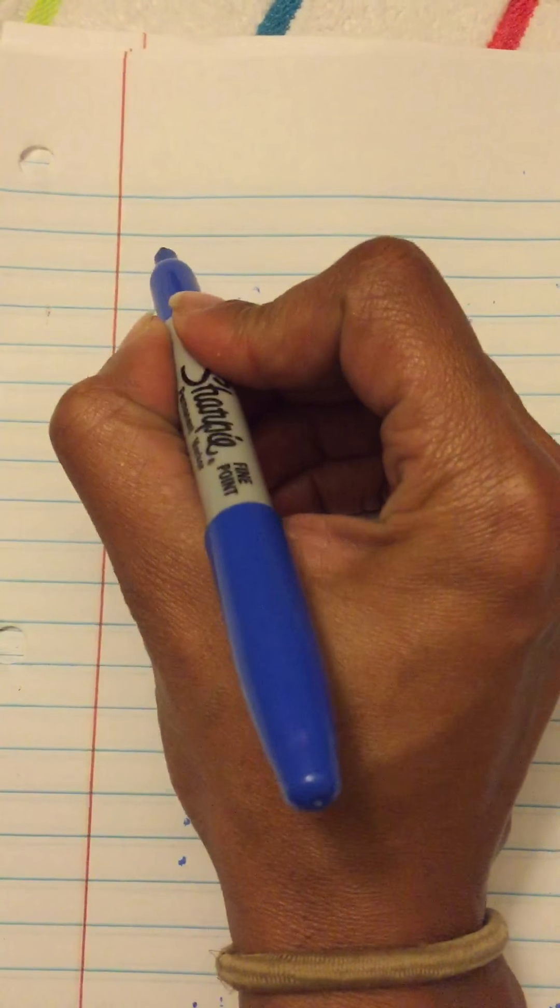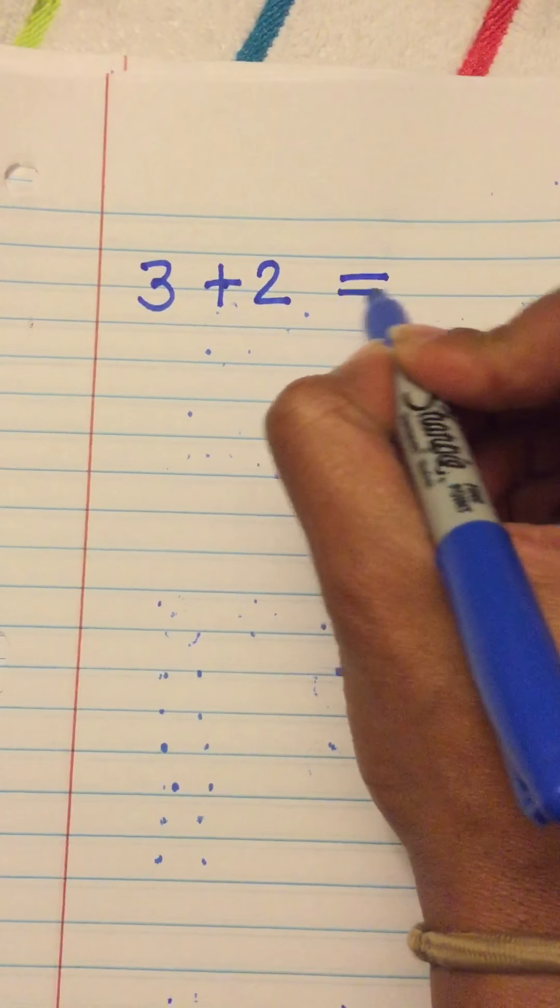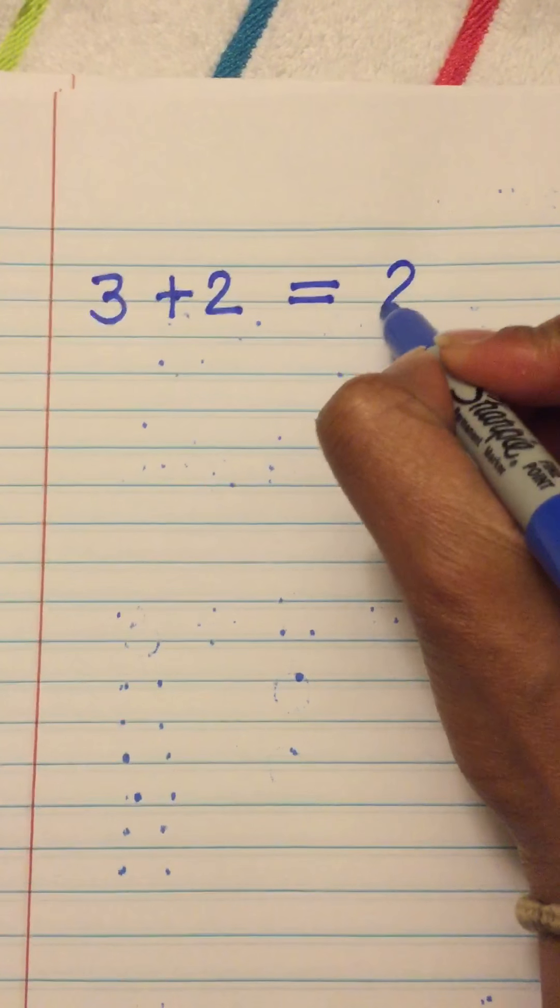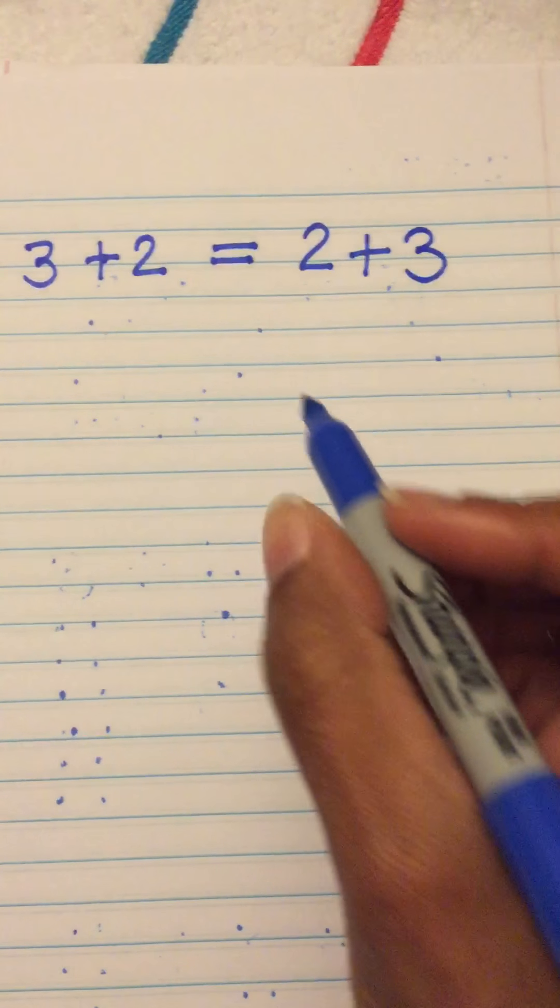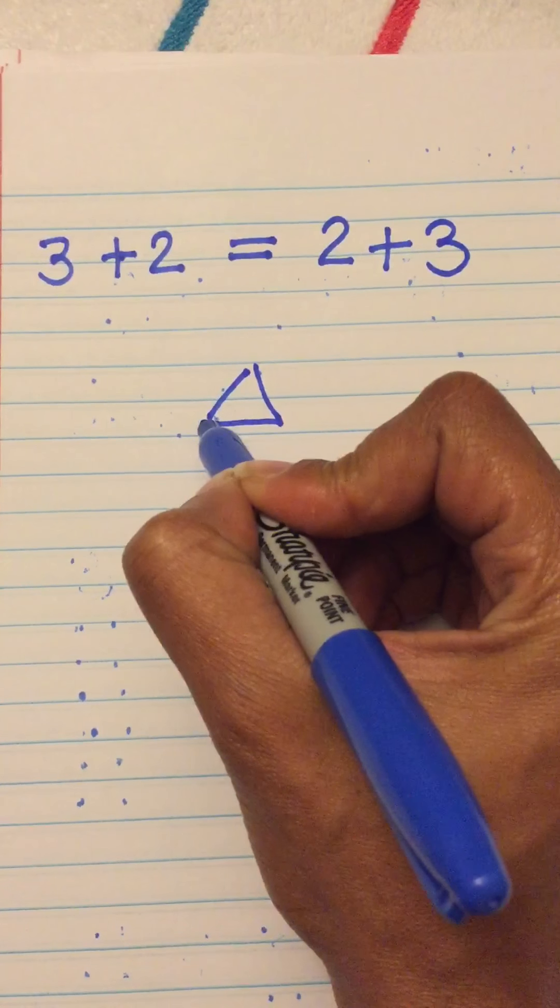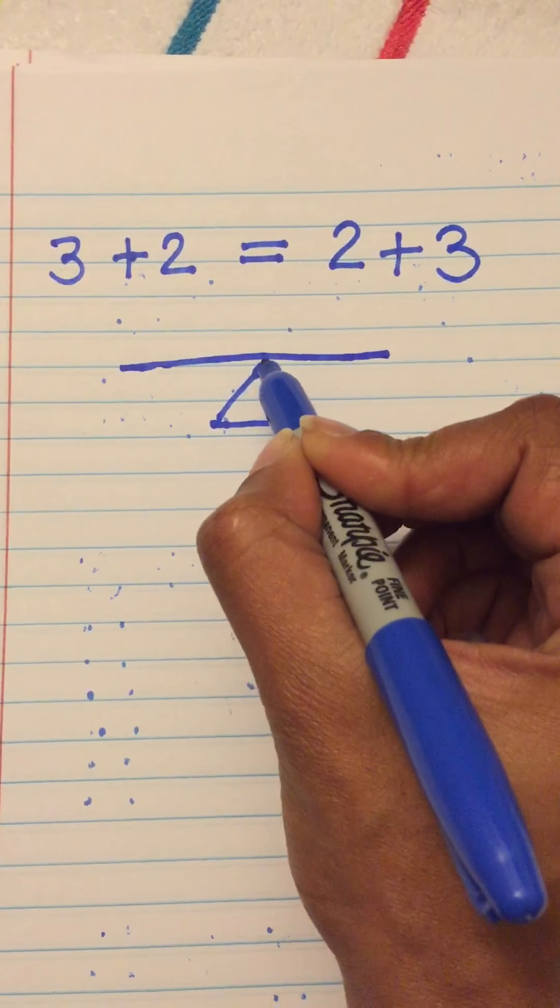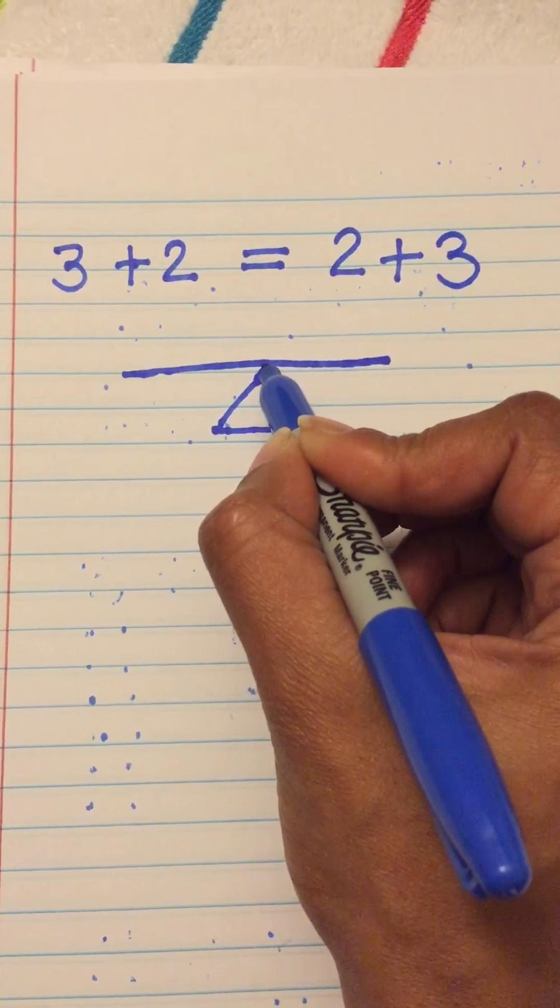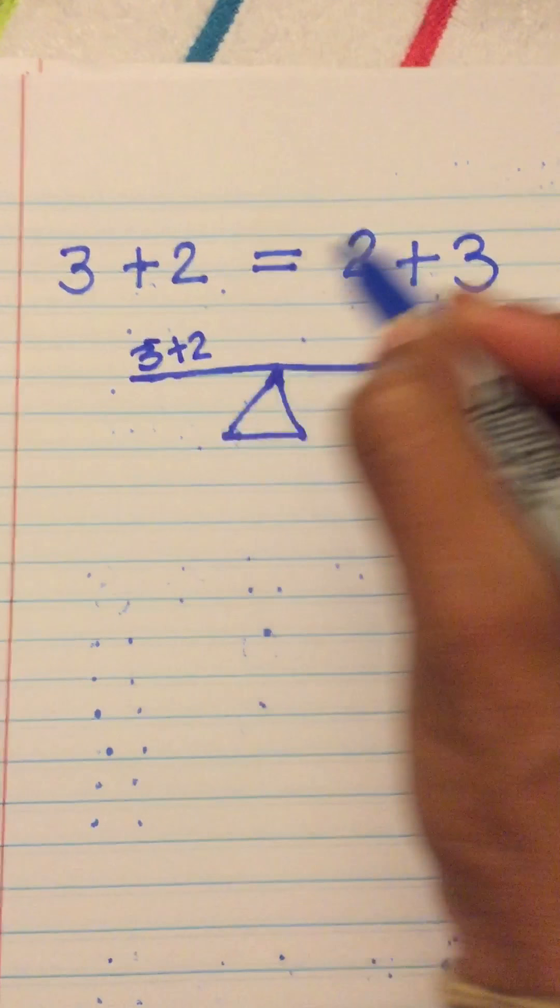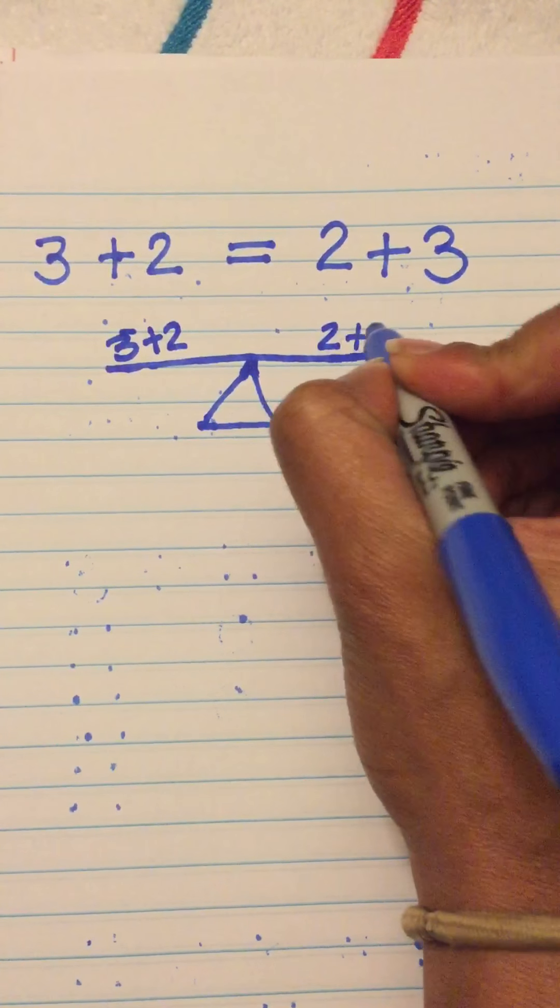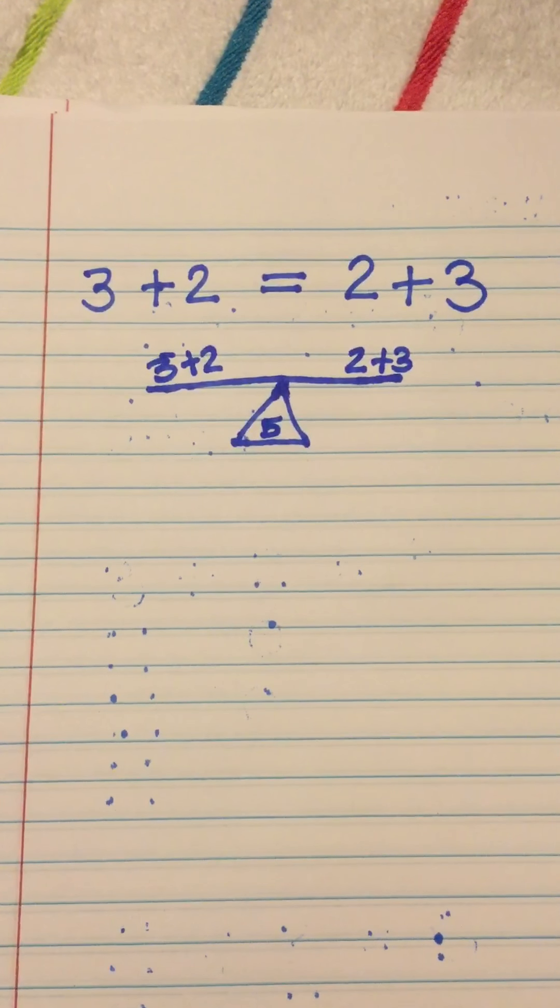We can say three plus two is equal to or the same as two plus three. Remember, if we put these on the seesaw like we do in class, they will be the same, balancing all very nicely on our seesaw. So, three plus two and two plus three. And our answer is five. Five in the middle.